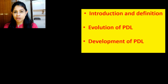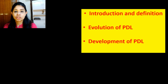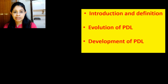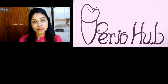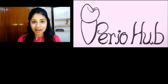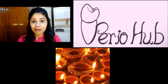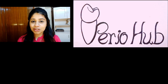To quickly recapitulate: we spoke about the introduction and definition of the periodontal ligament from the glossary of periodontal terms, its evolution, its development, the cervical loop, the Hertwig's epithelial root sheath, and the two cell populations from the dental follicle that give rise to the PDL. I hope this introductory video was helpful. If it was, please give it a thumbs up and subscribe to the channel. Happy Diwali to everyone — we'll meet next with Part 2 on the PDL. Until then, take good care of yourself. This is Periohub signing off.